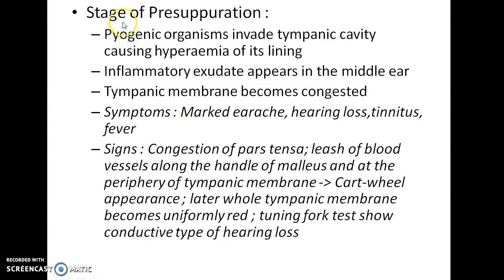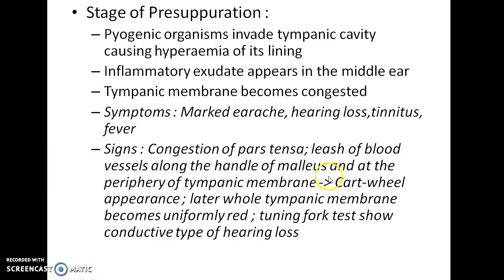The next stage is the stage of pre-suppuration. Pyogenic organisms invade the tympanic cavity causing hyperemia of its lining. Inflammatory exudate appears in the middle ear and the tympanic membrane becomes congested. Symptoms are marked earache, hearing loss, tinnitus, and fever. Signs include congestion of pars tensa, a leash of blood vessels along the handle of malleus and at the periphery of the tympanic membrane giving it a cartwheel appearance. Later the entire tympanic membrane becomes uniformly red. Tuning fork tests show conductive type of hearing loss.